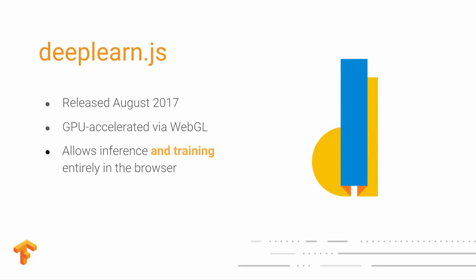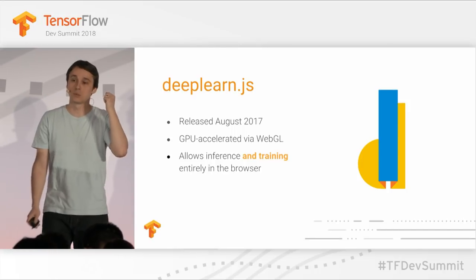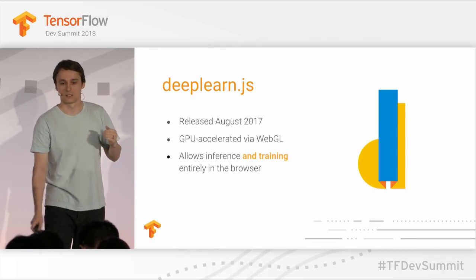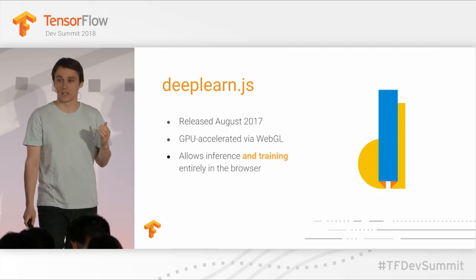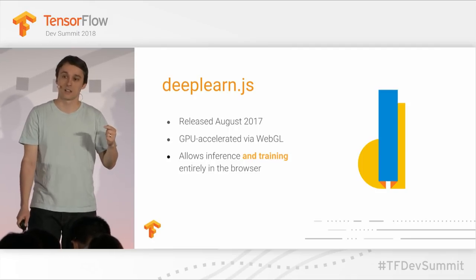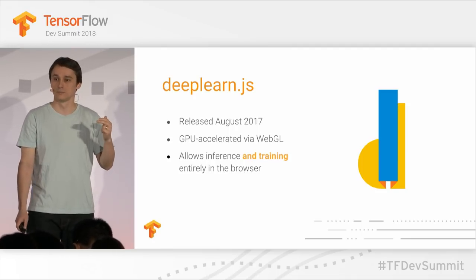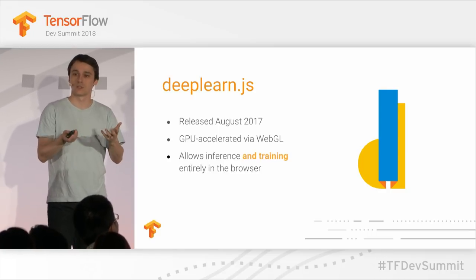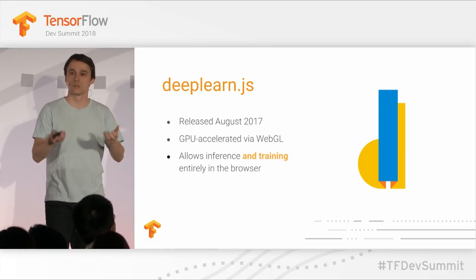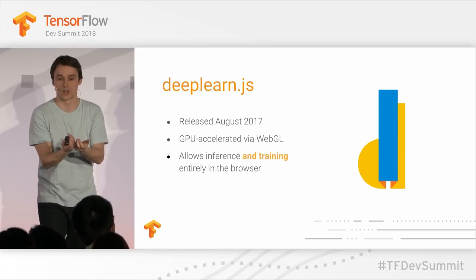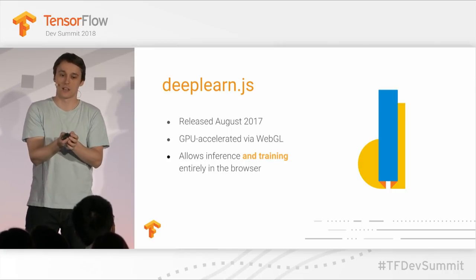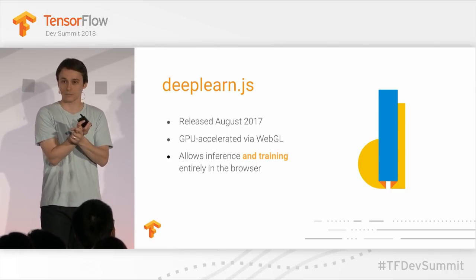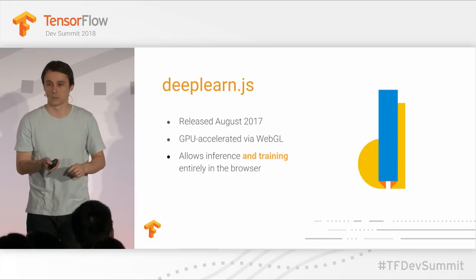And we did it. We released DeepLearn.js, a JavaScript library that is GPU-accelerated via WebGL — a standard in the browser that allows you to render 3D graphics — and we utilize it to do linear algebra for us. DeepLearn.js allows you to both run inference in the browser and training entirely in the browser.